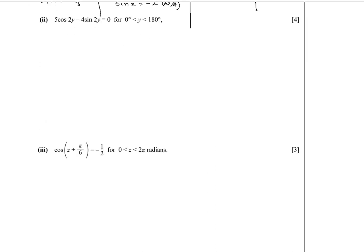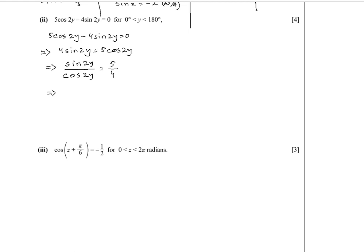Now let's find Y from the second equation: 5cos2y minus 4sin2y equals zero. Rearranging: 4sin2y = 5cos2y. Dividing both sides: sin2y over cos2y = 5/4. Since sinθ/cosθ = tanθ, we get tan2y = 5/4.